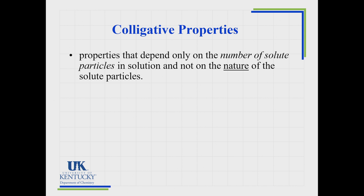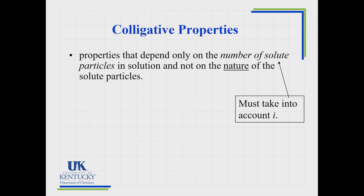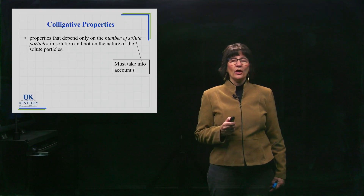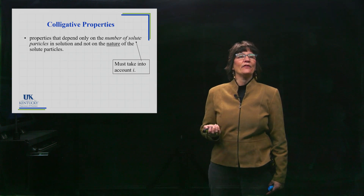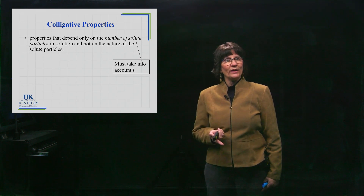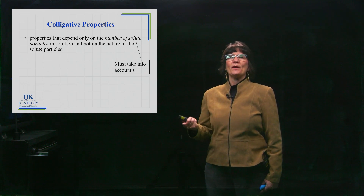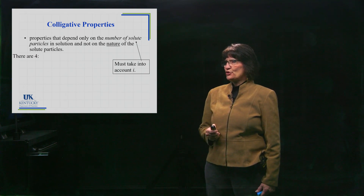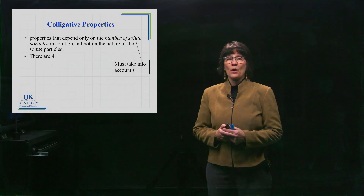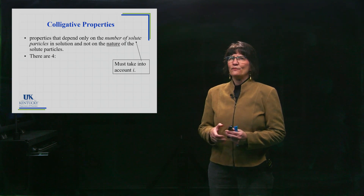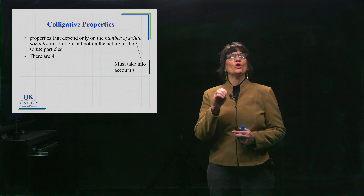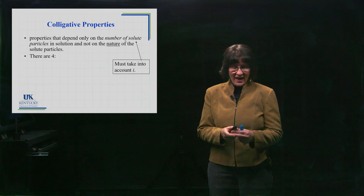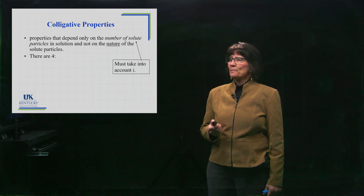That's what a colligative property is. Now, if you're going to talk about the number of solute particles, you're going to have to take into account the Van't Hoff factor. So we will be considering the i in order to determine the number of particles in solution. It's important that you learn the names because they help us understand the direction of how these colligative properties go.